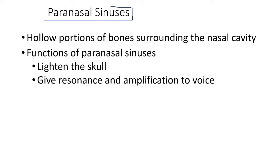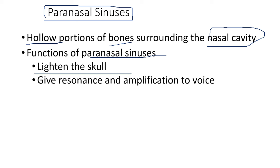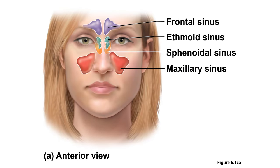Paranasal sinuses are cavities in our skull — hollow portions of bones surrounding the nasal cavity. Their functions are to lighten the skull because they contain air and to give resonance and amplification to our voice. We have the frontal sinus, ethmoid sinus, sphenoidal sinus, and maxillary sinus — they are responsible for giving us good sound quality.